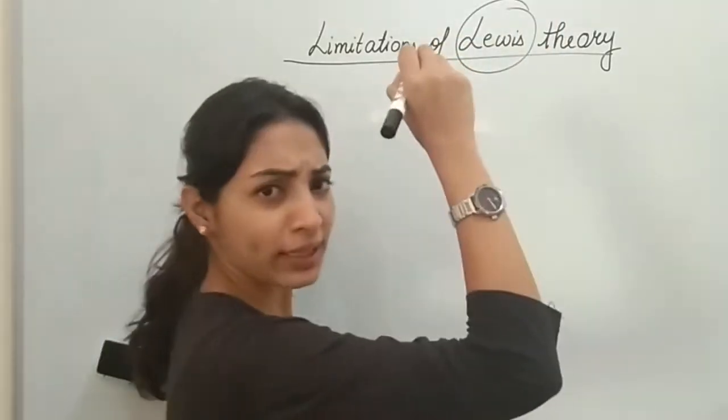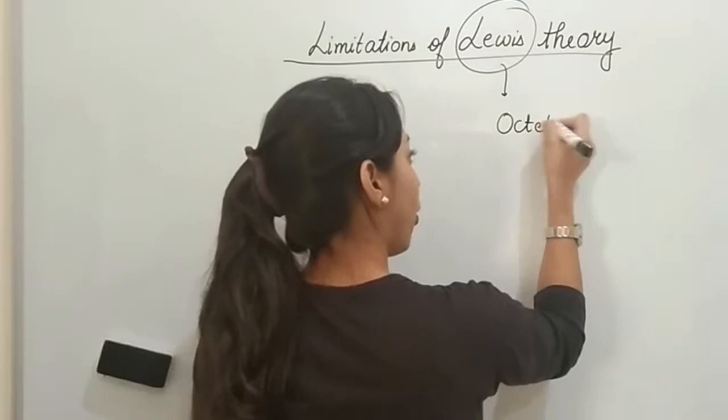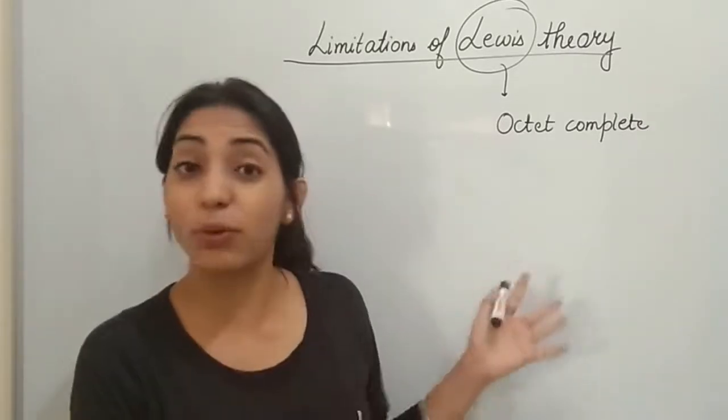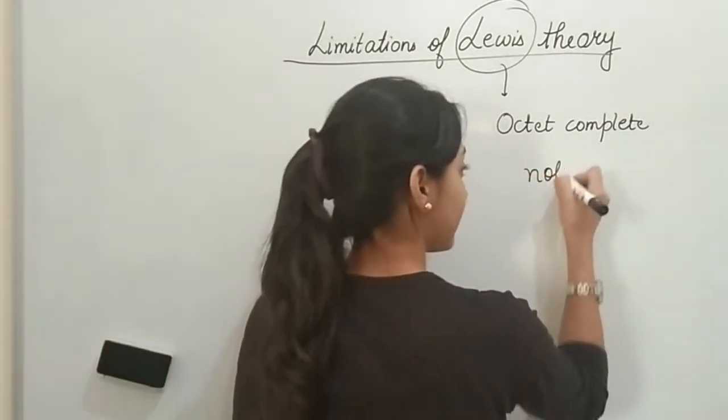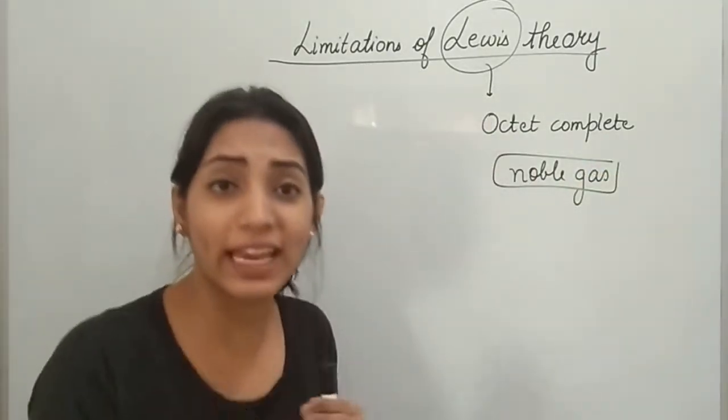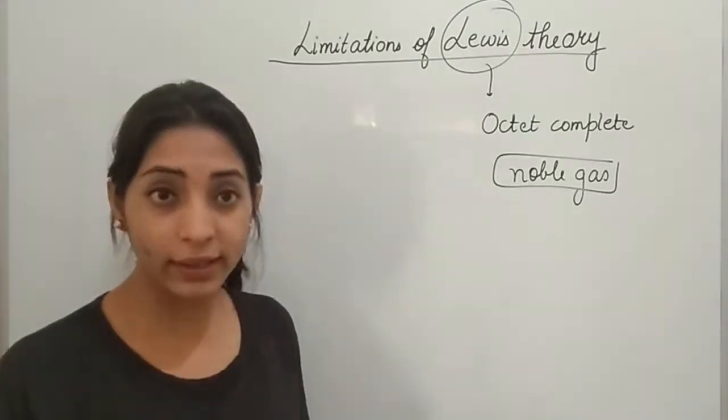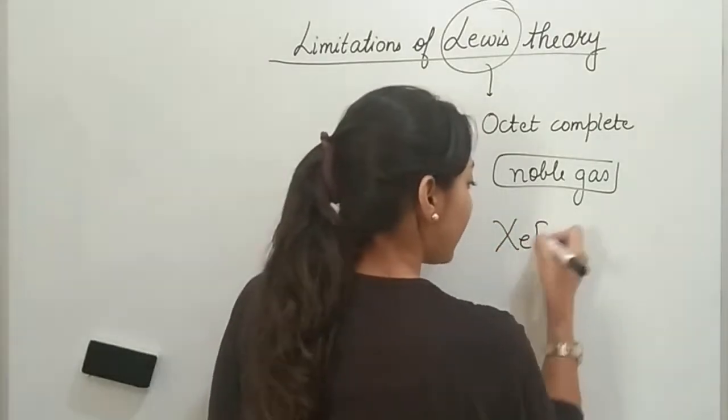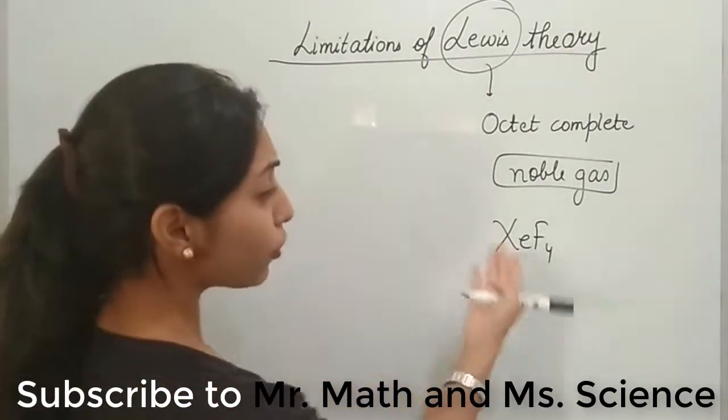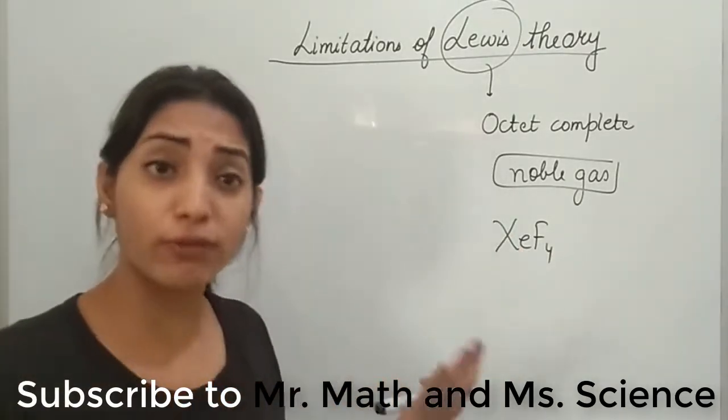What did Lewis say by the way? Lewis said that if any atom is having octet complete, that atom would not react. He said noble gases, they have their octet complete and hence they will not combine with any other element to form a molecule or to form a compound, right. But now let me tell you there is a molecule which is XeF4, xenon is a noble gas. How come noble gas which is already having its octet complete is combining with another element fluorine to form a molecule?